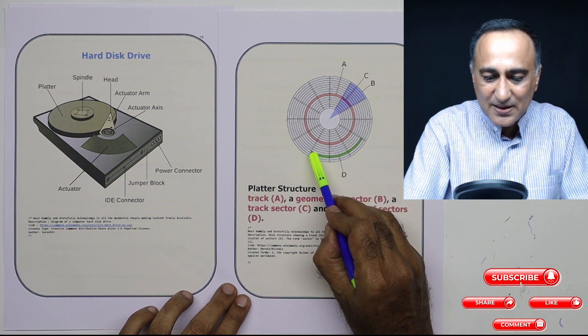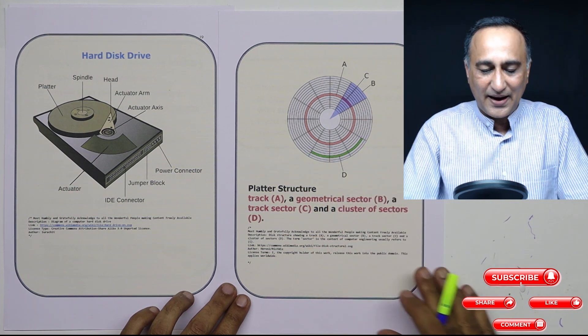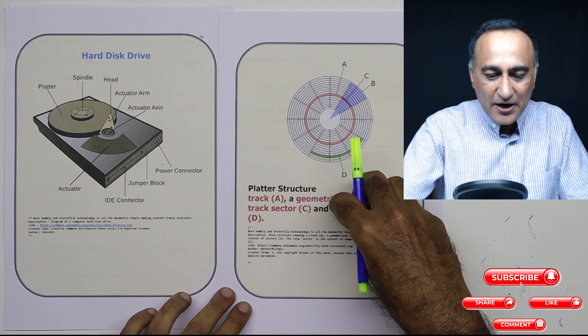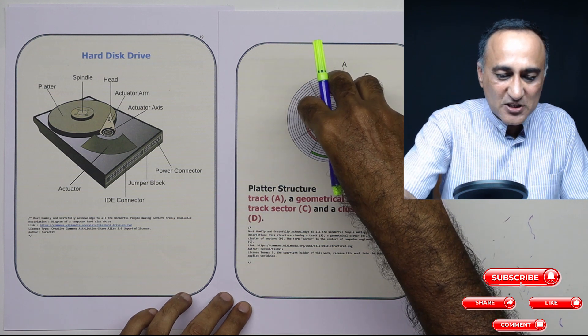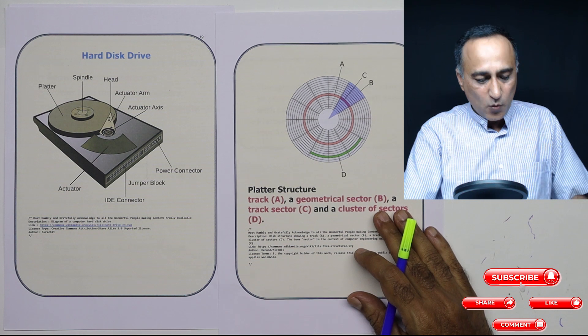Now what I have done is on the same track, I have taken one, two, and three. So there are three sectors on this particular track. This gives you an idea of how information is stored: it is stored in terms of sectors and tracks.